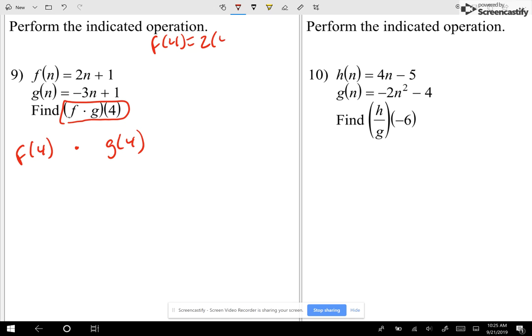Let me figure out what f of 4 is. I have 2 times 4 plus 1, 8 plus 1. So f of 4 is 9. Let me find out g of 4 is negative 3 times 4 plus 1. That is negative 12 plus 1. So g of 4 is equal to negative 11.